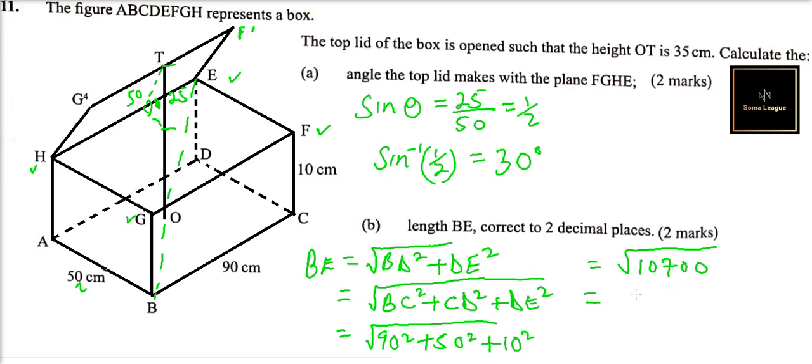When you get the square root of this, you get it is 103.44 centimeters, and this is to two decimal places. Very important, because that value will give you a decimal that has more than two decimal places. So that is how you work out that question, and you'll be able to score four marks.